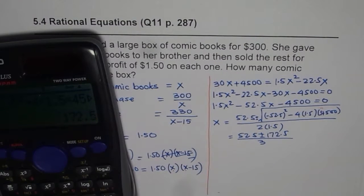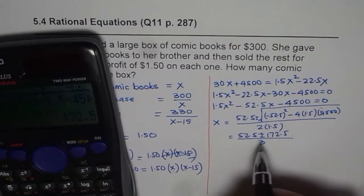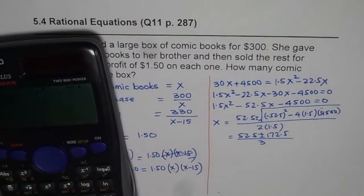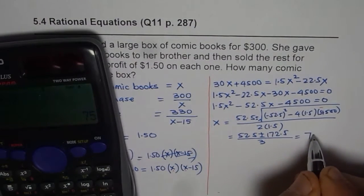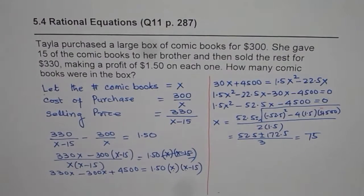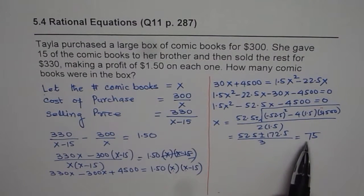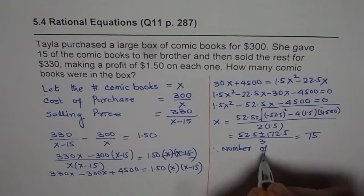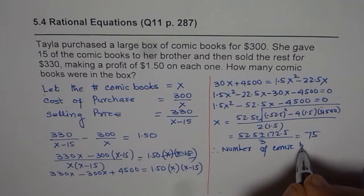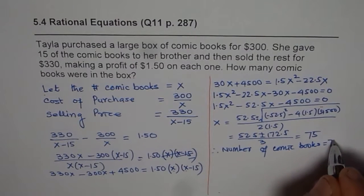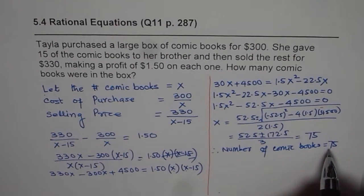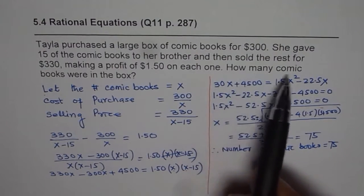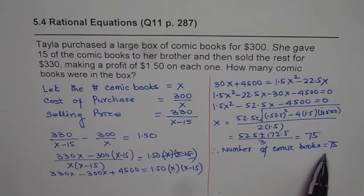We get negative answer should not be considered, so we'll consider the positive answer. So we'll add them, divide by 3. So let's add 52.5 to 172.5 divided by 3 gives us 75, so we get one possible answer which is 75. So what we now know is the number of books is 75. Therefore, the number of comic books originally purchased is 75. Now read the question once again. It says, how many comic books were in the box? So these are the number of books in the box.